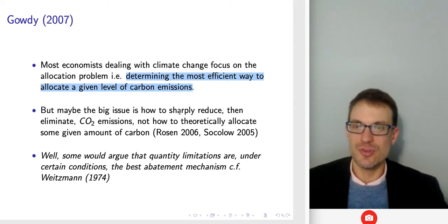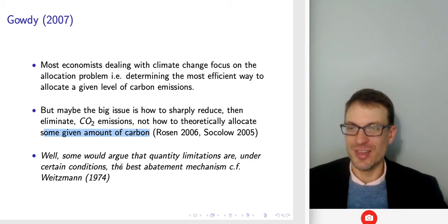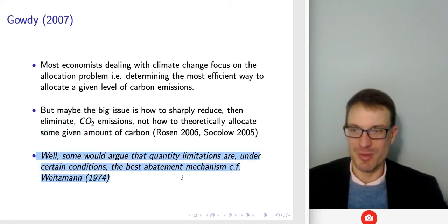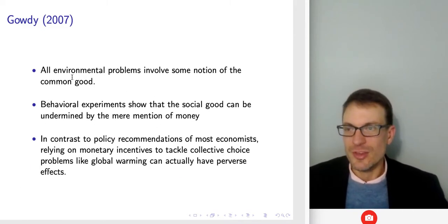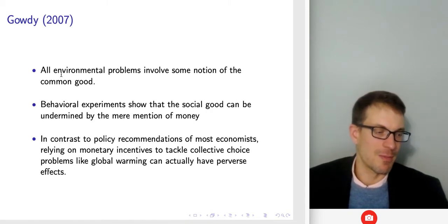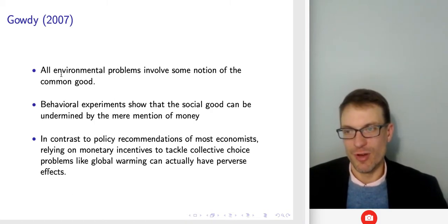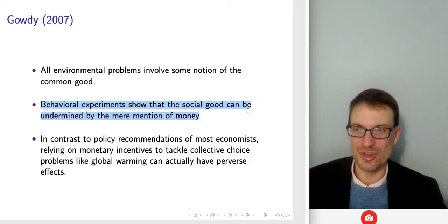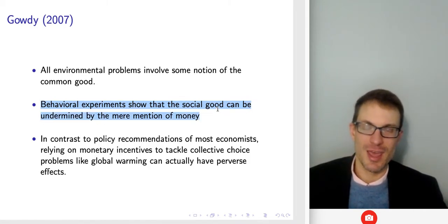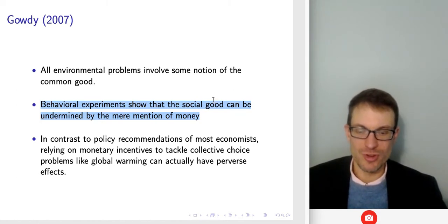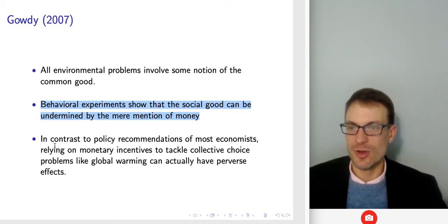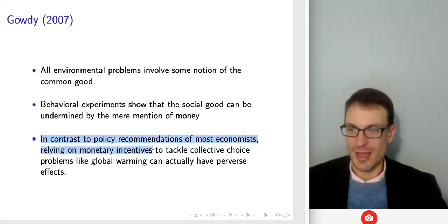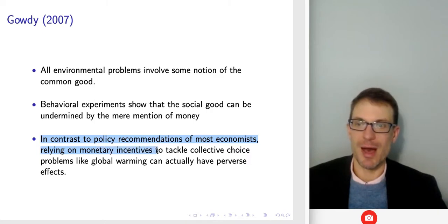Maybe the big issue is how to sharply reduce or eliminate carbon emissions, not just how to theoretically allocate some given level of carbon. An important recognition in the paper is that environmental problems involve a common good — we have a potential tragedy of the commons situation. Behavioral econ shows that the social good can be undermined by the mere mention of money; monetary incentives and prices can contaminate important intrinsic motivations. In contrast to the policy recommendations of most economists, relying on monetary incentives to tackle collective choice problems like global warming could actually have perverse effects.